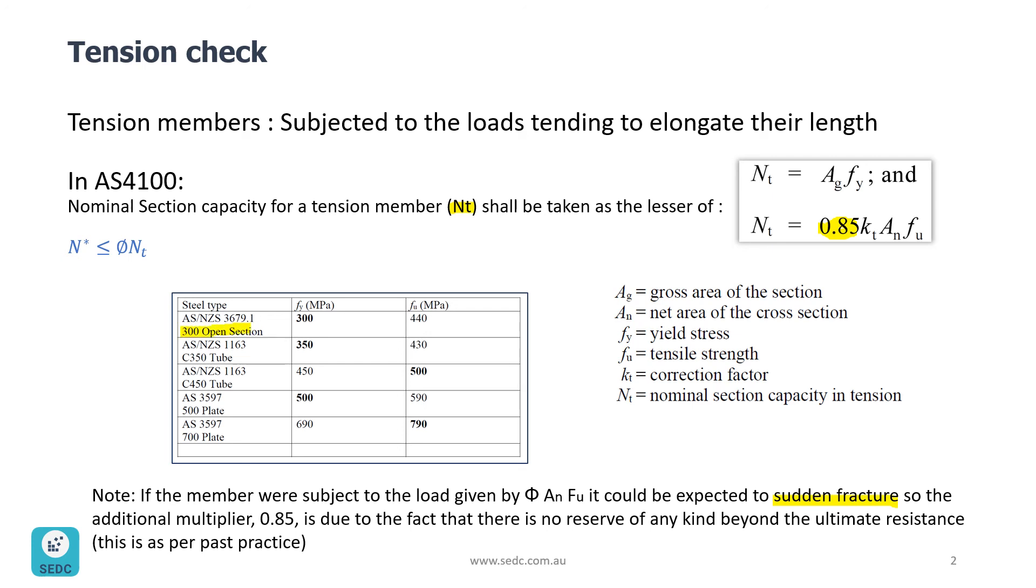For example, if you are choosing 300 open section, the first formula would be governing, which is good. But if you choose C450 tube, then the second formula will be governing.